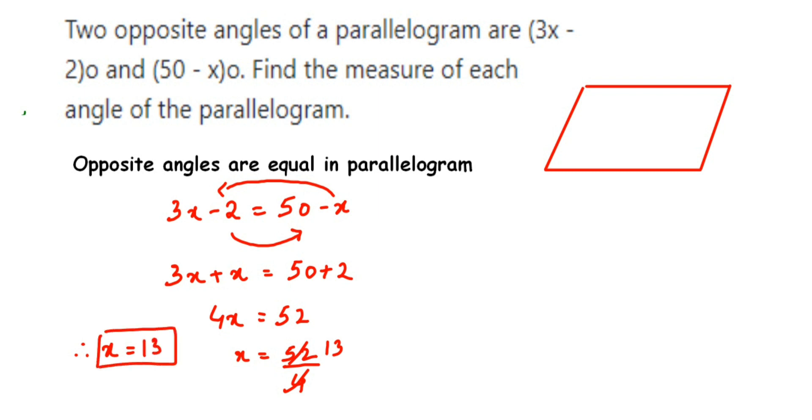But we have to find out the angle, not just the x value. If I find out one angle, I can find the other angles. Suppose this is my parallelogram ABCD, and one angle, let me take it as 50 - x.